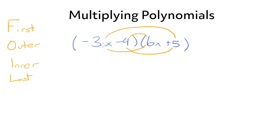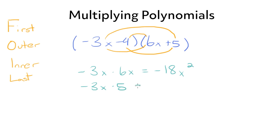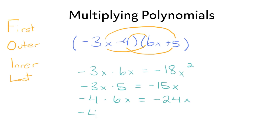Let's multiply our first terms together: negative 3x times 6x equals negative 18x squared. Then we'll multiply our outer terms: negative 3x times 5 equals negative 15x. Then our inner terms: negative 4 times 6x equals negative 24x. And finally our last terms: negative 4 times 5, which gives us negative 20.